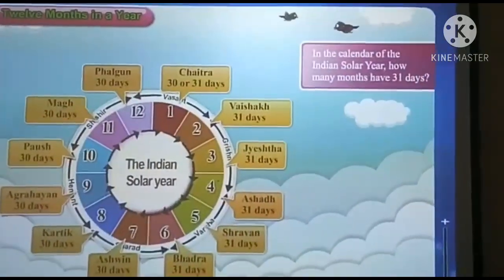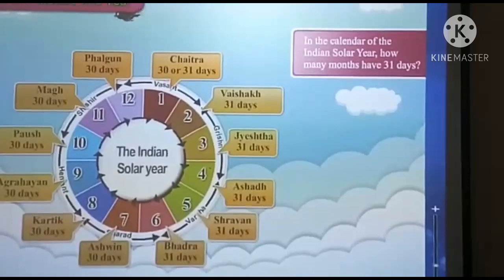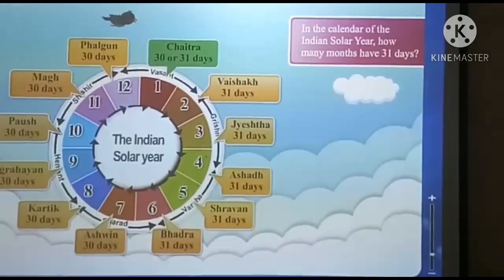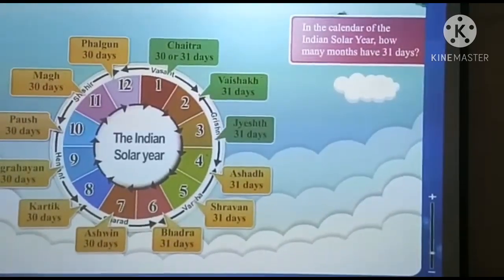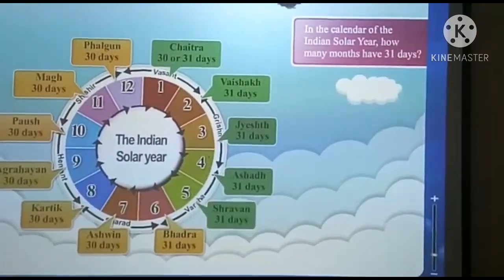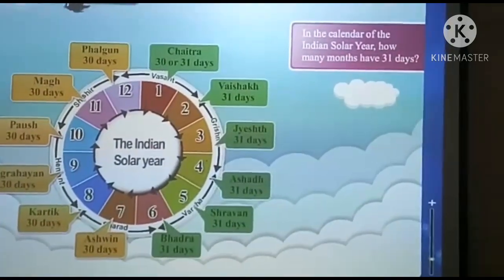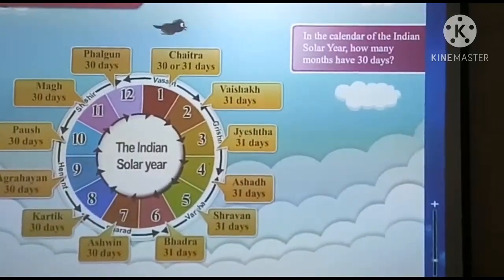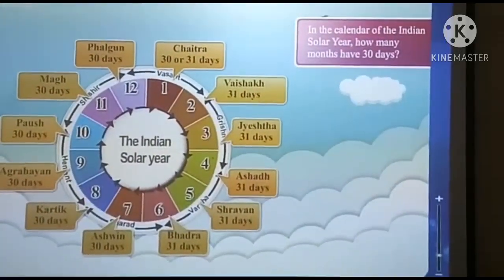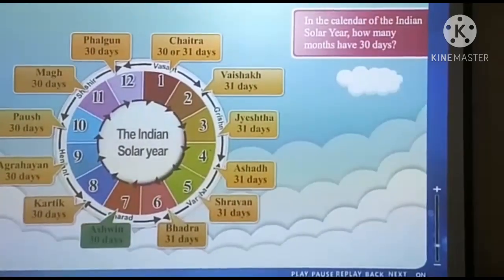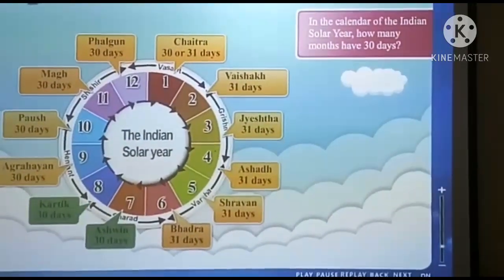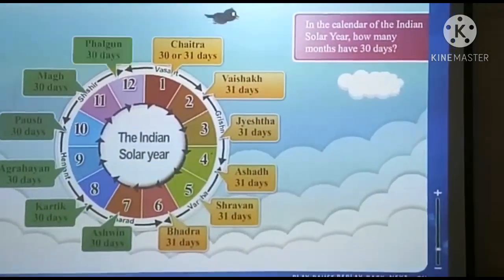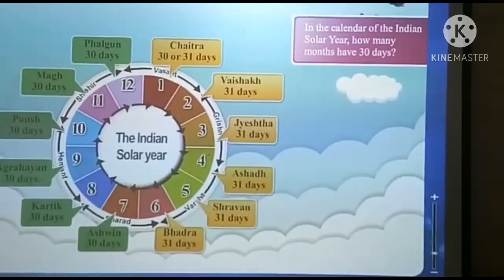In the calendar of the Indian solar year, how many months have 31 days? Chet, Vaisakh, Jisht, Ashad, Shravan and Bhard — these months have 31 days. How many months have 30 days? Ashwin, Karthik, Agrahayan, Posh, Magh and Pahagum — these months have 30 days.